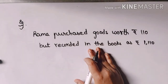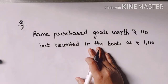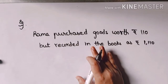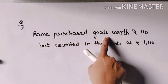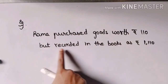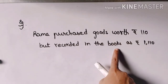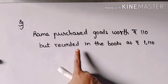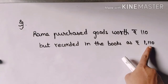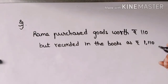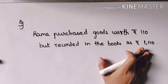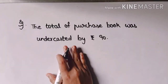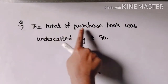Students, I am giving you one question — tell me the answer in the comment section below. The question is: Rama purchased goods worth rupees 110 but recorded in the purchase book as rupees 1,110. How can you rectify this entry? Please comment your answer below.